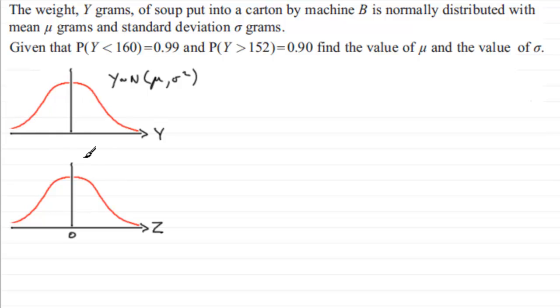Now, on this graph, I would put the mean mu, which we've got to find. Now, we need to put on also this data that we've got up here. We're told that the probability of Y being less than 160 is 0.99. Now I know that 160 then must go over to the right of the mean mu.